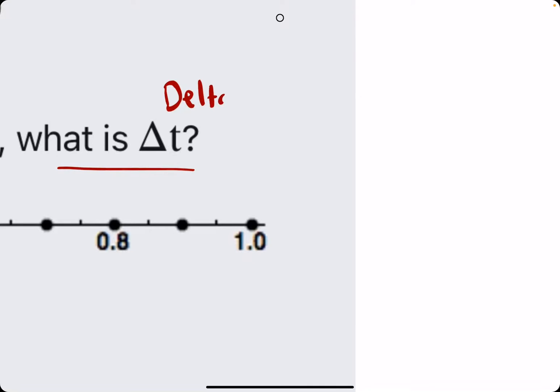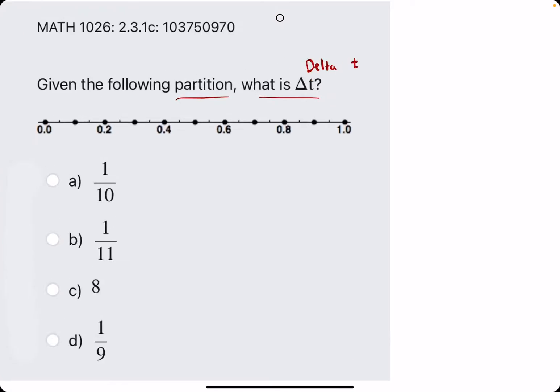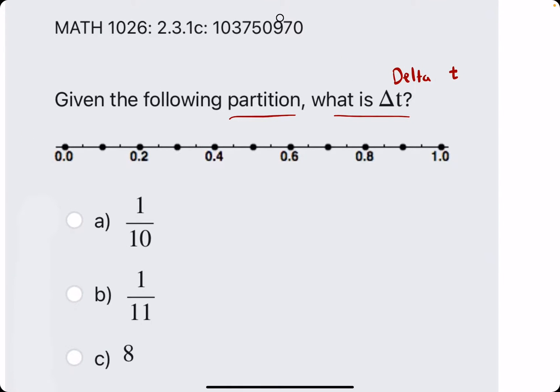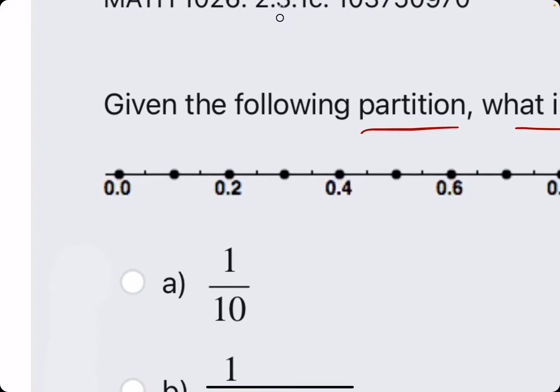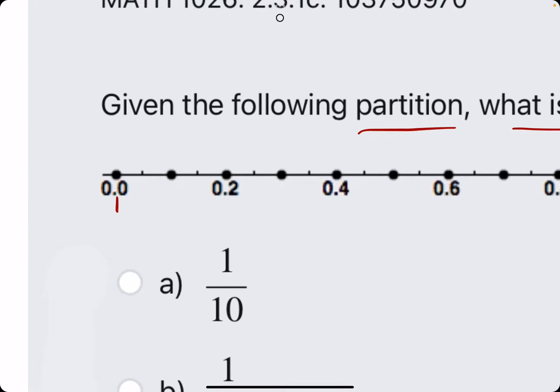Not call this triangle t. This is known as delta t. Delta t represents the difference in t values between each partition. They're saying between here and here and here, it's basically each of these black dots. What is the difference? That's what they're asking for.